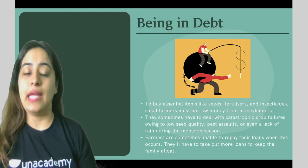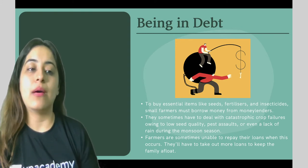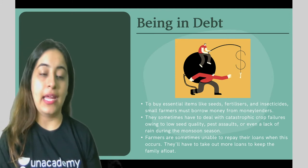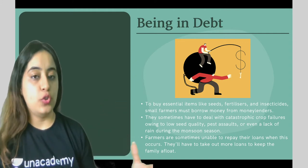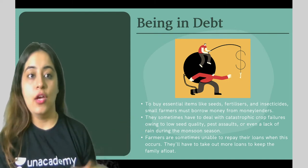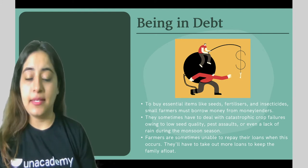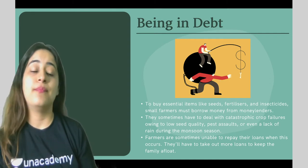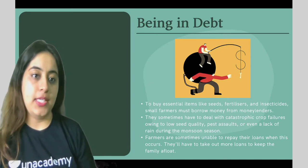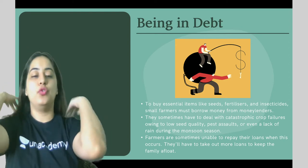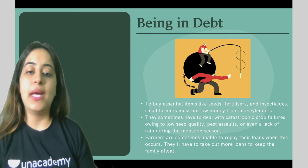Now we come to the topic of being in debt. Debt means when you owe someone money, and it can also be in terms of property or resources. To buy essential items like seeds, fertilizers, and insecticides, small farmers borrow money from money lenders who have large amounts of money, taking loans to support their farming needs.